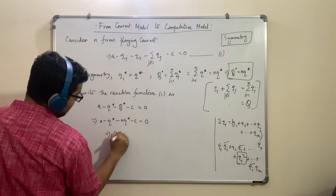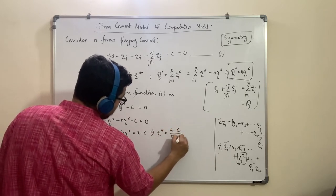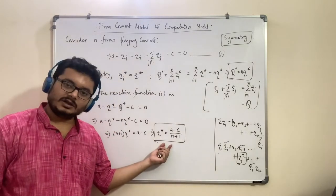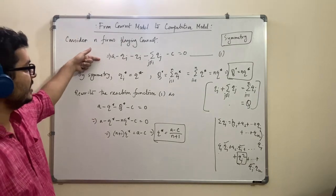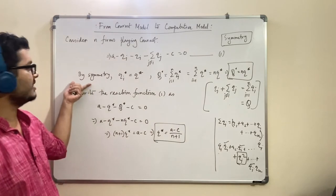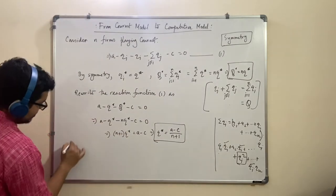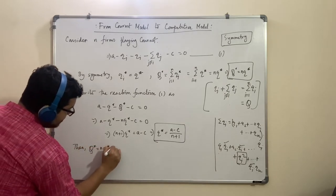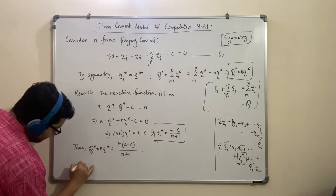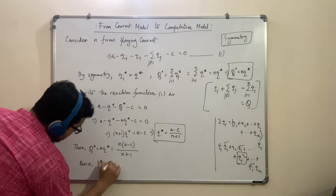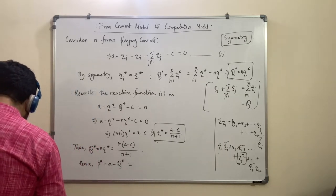If small q star = (A minus c)/(n+1), then capital Q star = n·q star = n(A minus c)/(n+1). Hence P star from the demand curve is A minus Q star. Calculating this, it becomes: [1/(n+1)]·A plus [n/(n+1)]·c. The reason for writing it in this fashion is that we are going to show this reaches the competitive model — P star will eventually equal c, which is the MC. That is why I kept the other component separate.